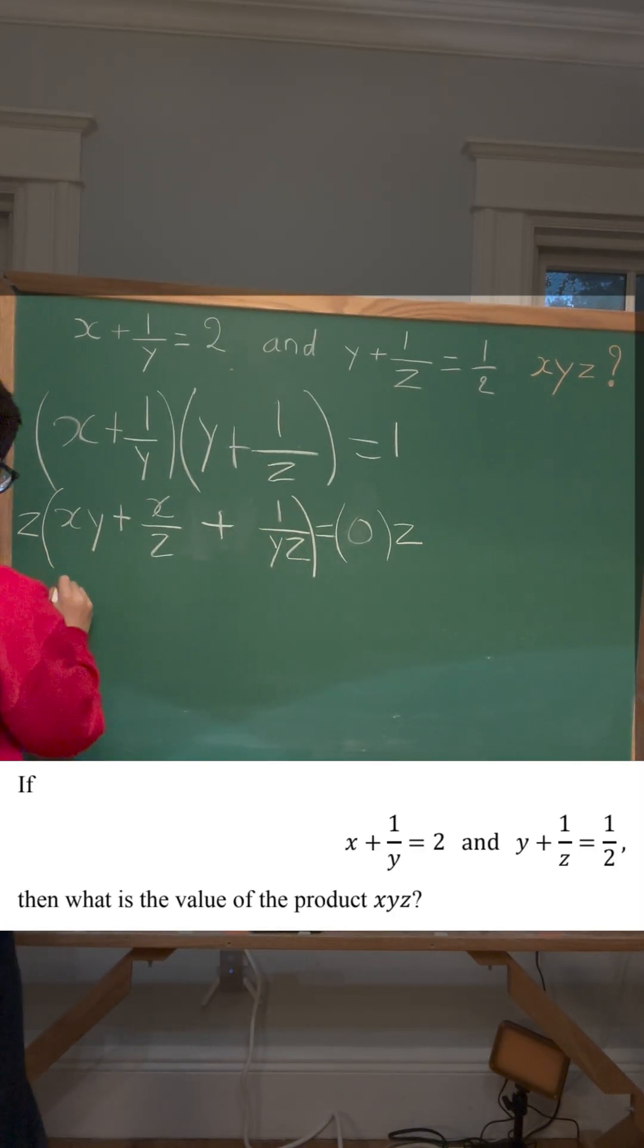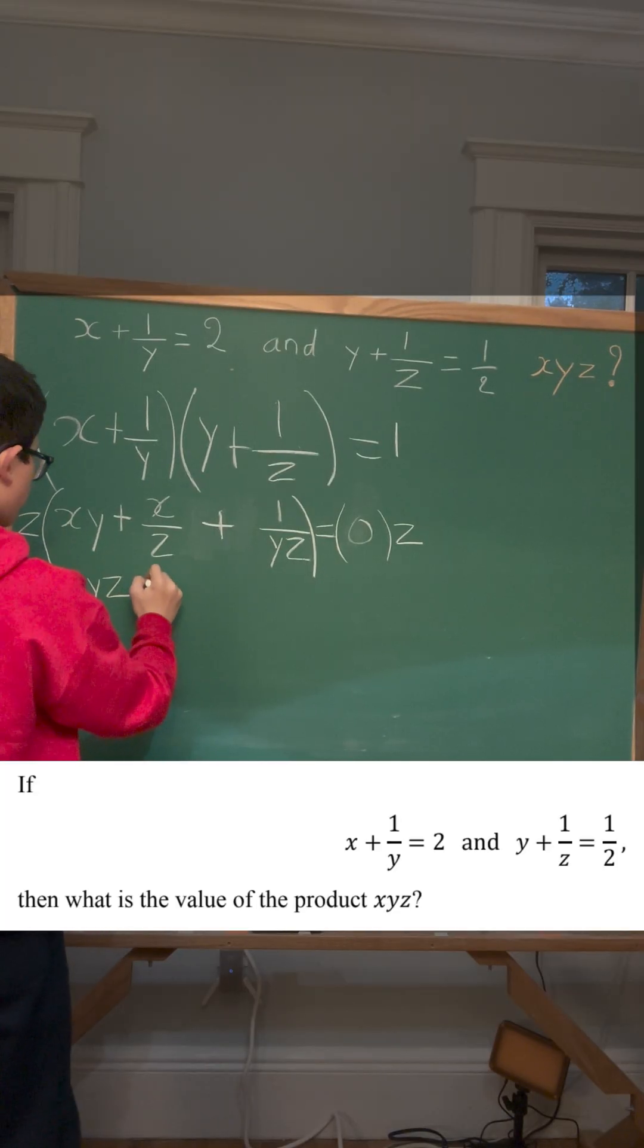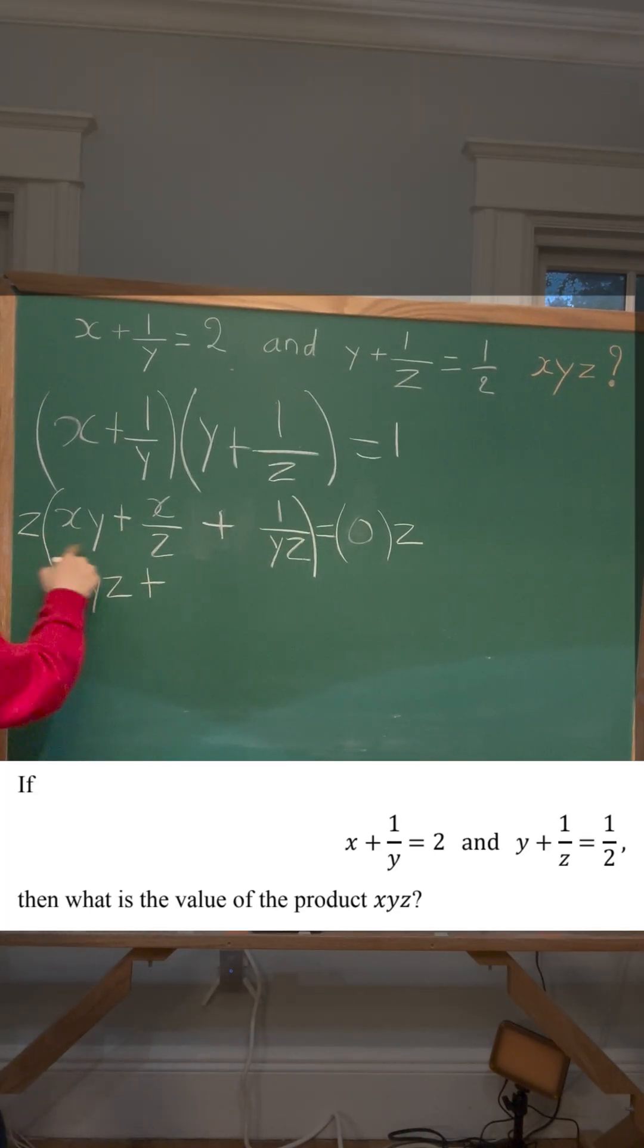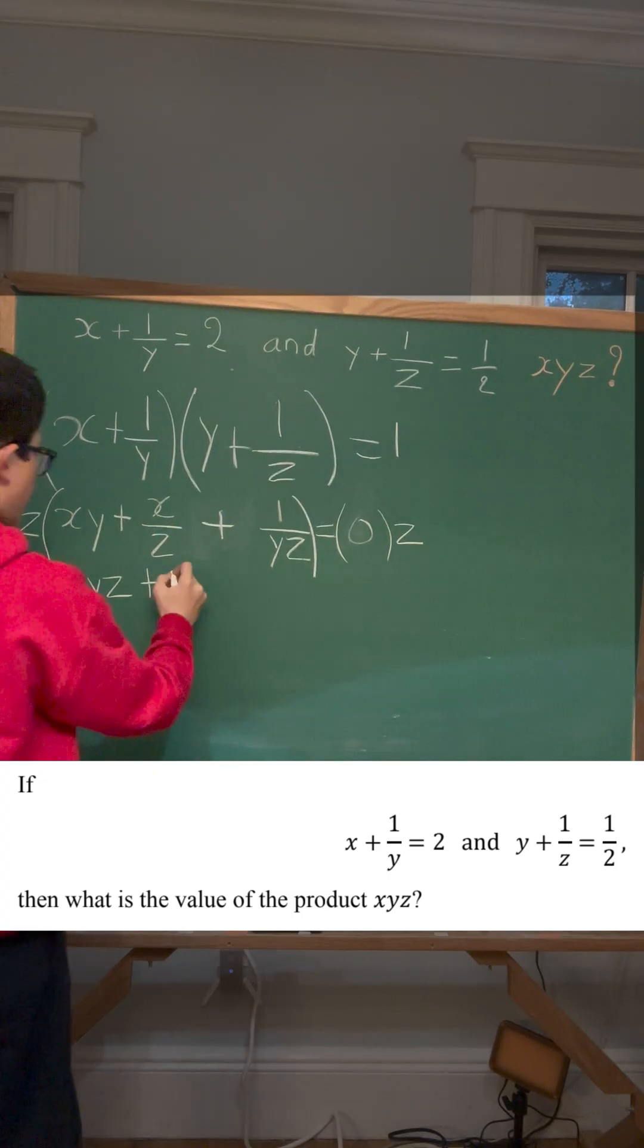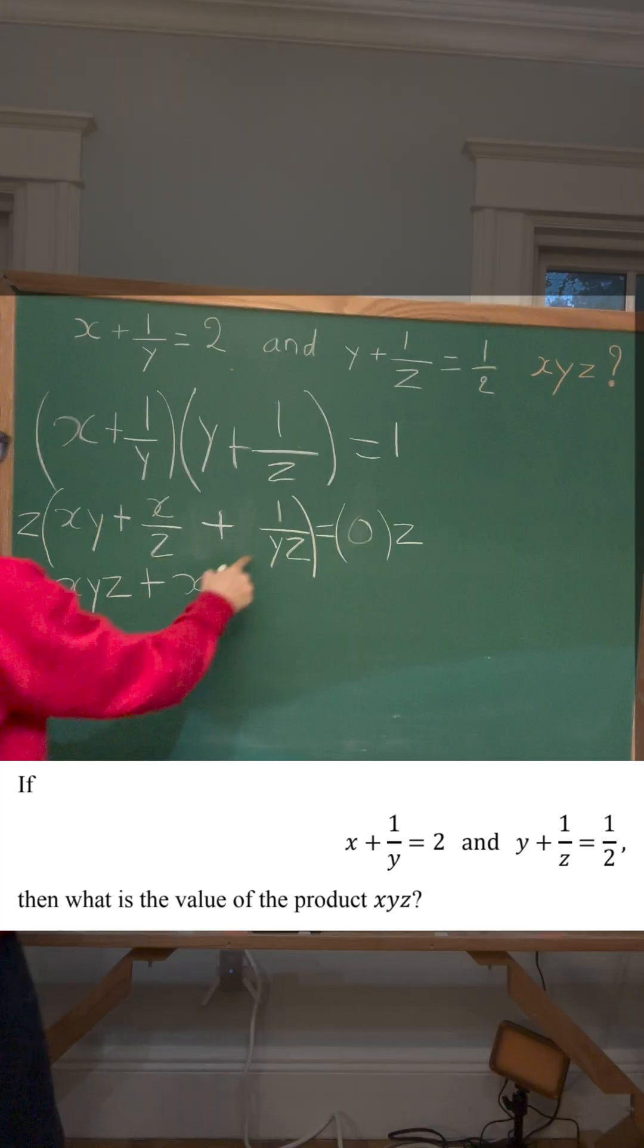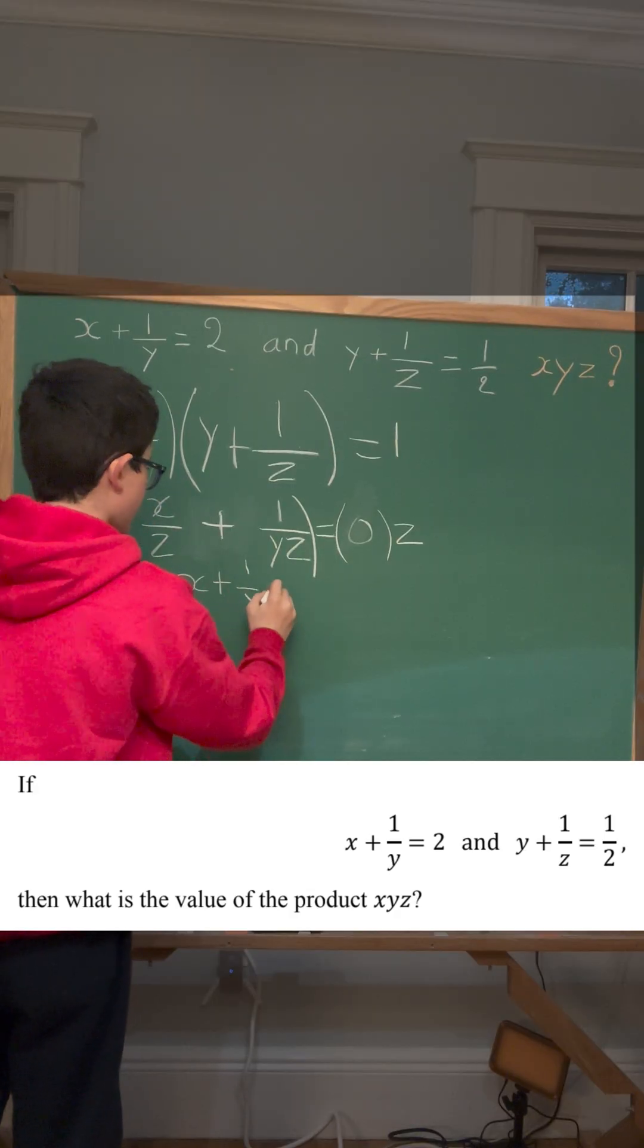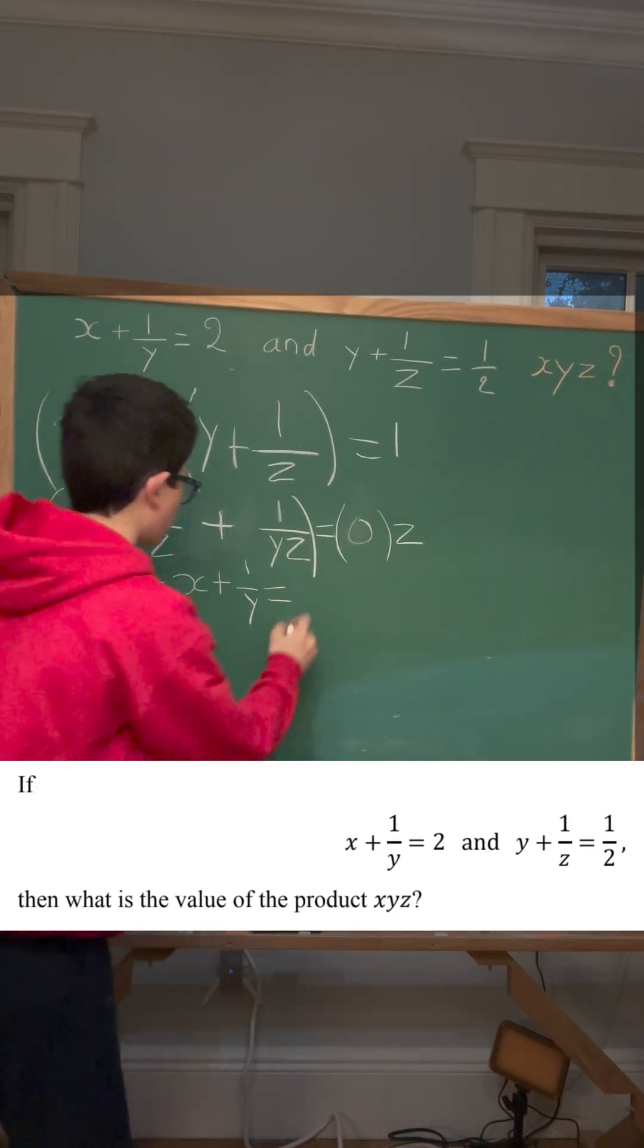z times xy is xyz, plus z times x over z, so the z's cancel out. We're left with x plus z times 1 over yz, so the z's will cancel out. All that's left is 1 over y, and this equals 0, because 0 times any number is 0.